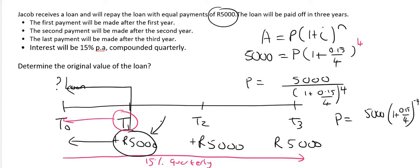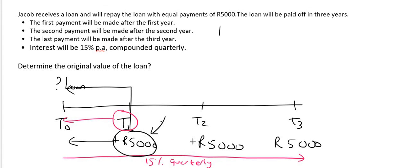So you don't have to go do the whole A equals P, 1 plus i to the power of n and then get P by itself. All you're going to actually do is you're going to take each amount.